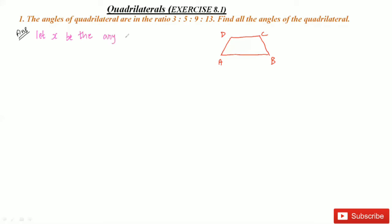After we assumed this variable x, we're getting 3x, 5x, 9x, and 13x. This variable x that we assumed, we're multiplying with the ratio. After multiplying, we're getting these values. Now we'll substitute these values.